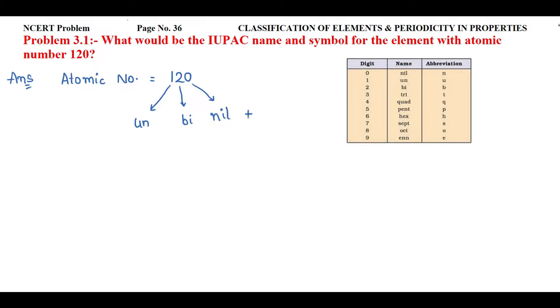And at the end we will write ium. With this the complete IUPAC name of this element will be unbinilium.